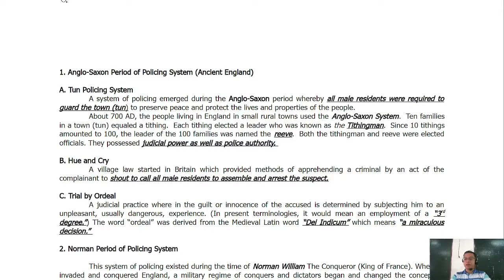Another form of trial by ordeal involved boiling oil — they would prepare boiling oil and require the accused to retrieve something from it. If the accused was not burned by the oil, it means he is not guilty. That is how trial by ordeal was implemented.